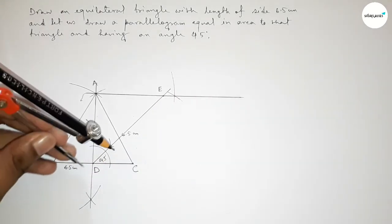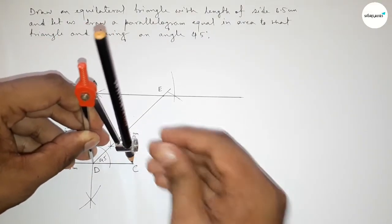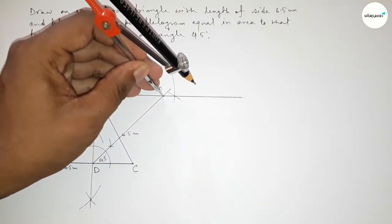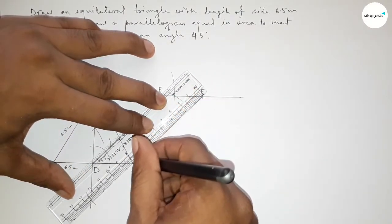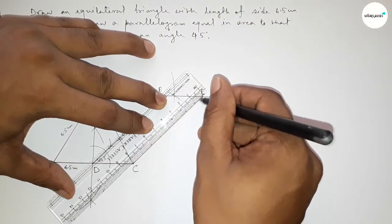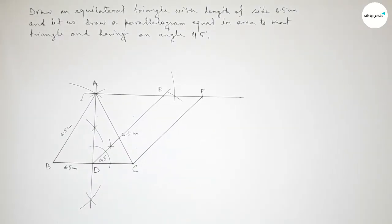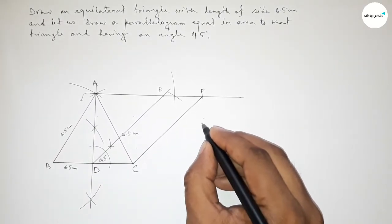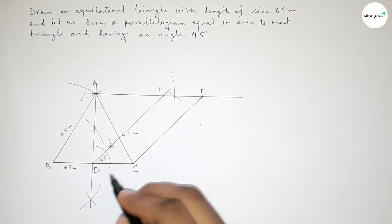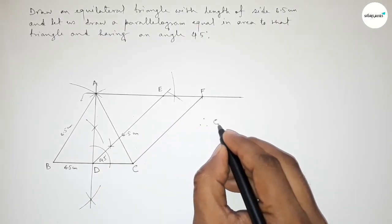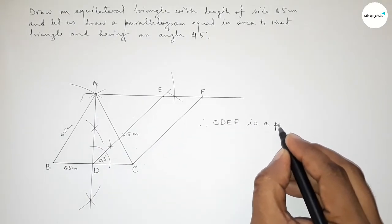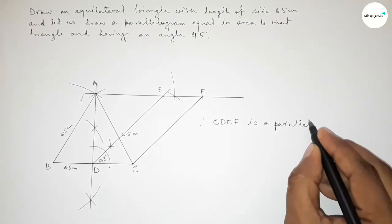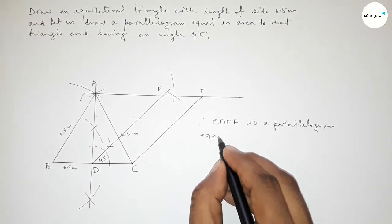Taking the length DC using the compass, placing it and cutting arcs to complete the figure. We now have parallelogram CDEF, which is equal in area to triangle ABC.